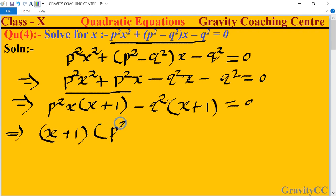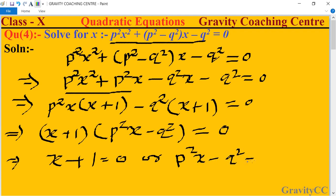p²x - q² equal to zero, and x + 1 equal to zero, or p²x - q² equal to zero.